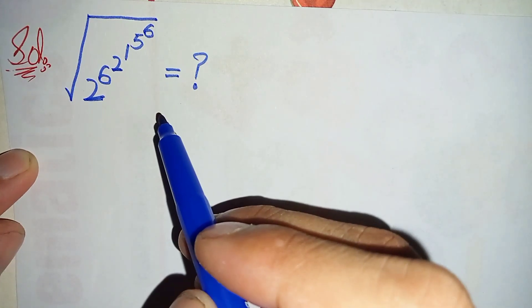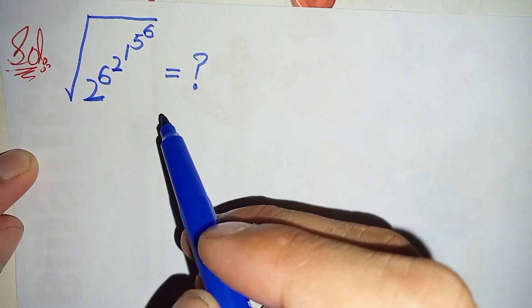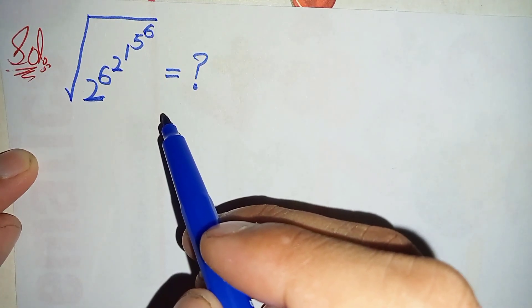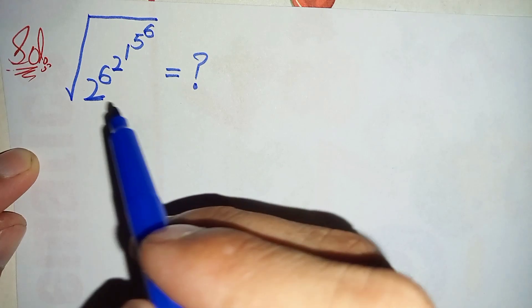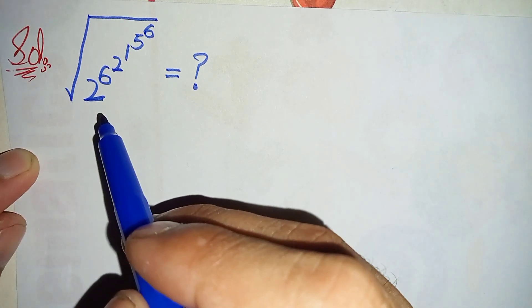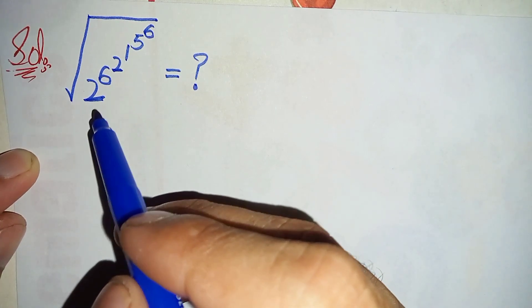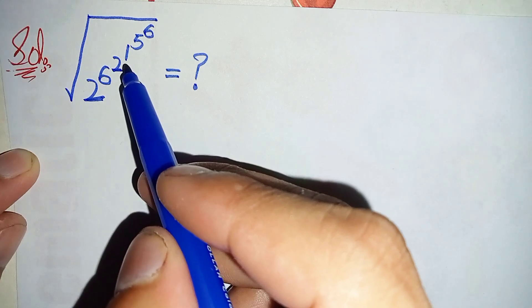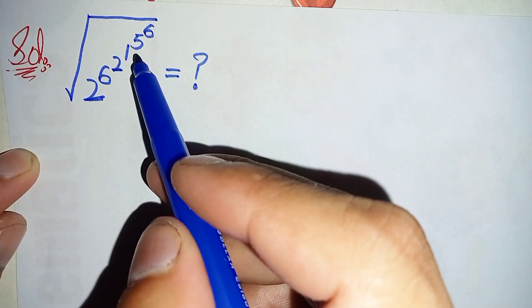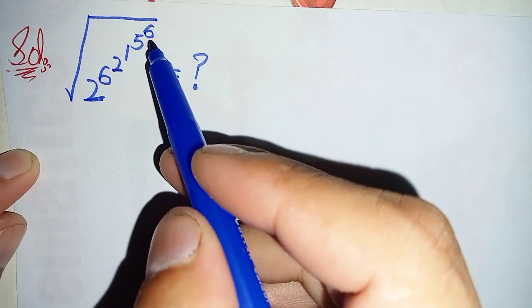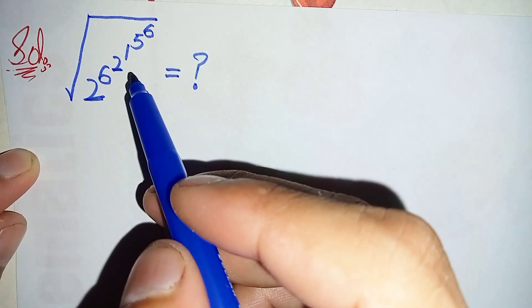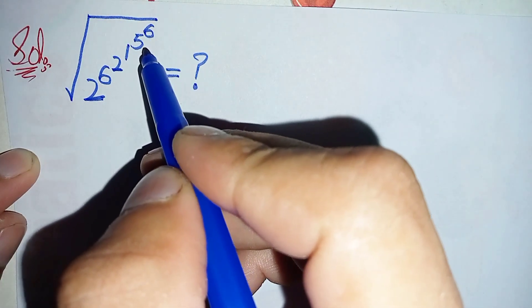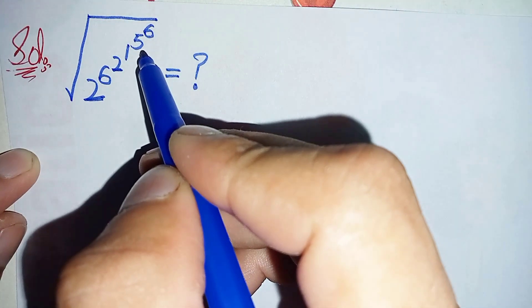Hi everyone, you are welcome to Math Explorer. Today we will solve this interesting square root and radical math problem: 2 raised to power 6, raised to power 2, raised to power 1, raised to power 5, raised to power 6. To solve this problem we will start from the top.